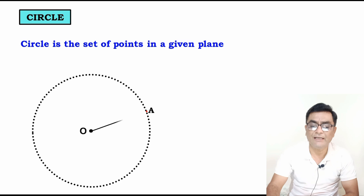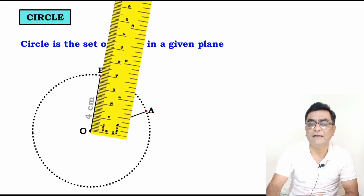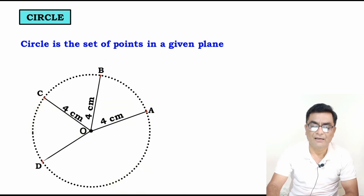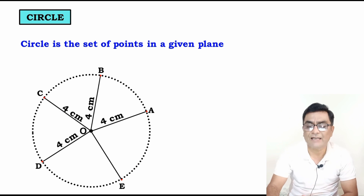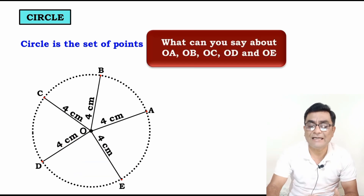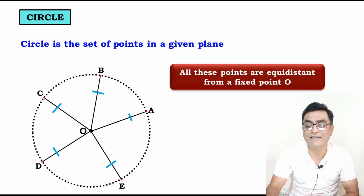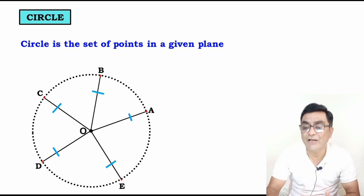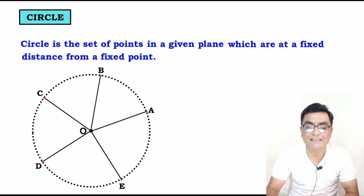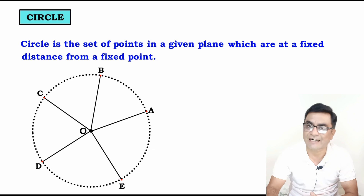Consider points A, B, C, D, and E on the circle. All these points are equidistant from a fixed point O. So circle is the set of points in a given plane which are at a fixed distance from a fixed point O.